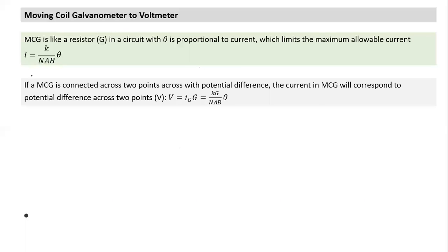If we connect an MCG across two points with some potential difference, it is equivalent to connecting a resistance across those two points. Current will start flowing, and the value of current flowing through the MCG will depend on the potential difference. The relationship between voltage V, galvanometer current IG, and resistance G is: V = IG × G.